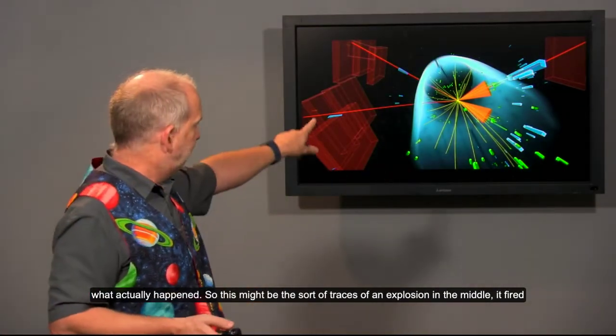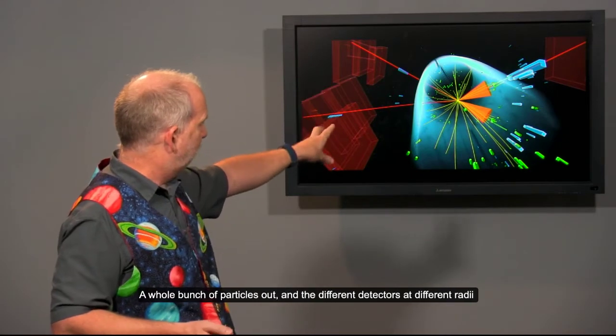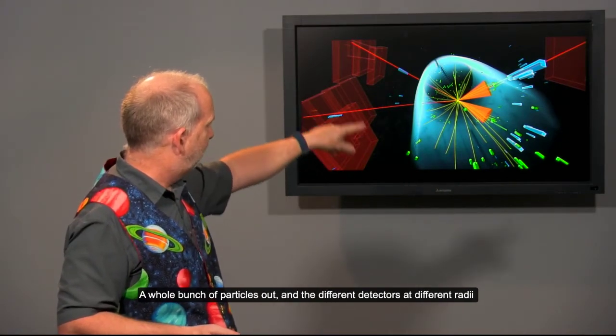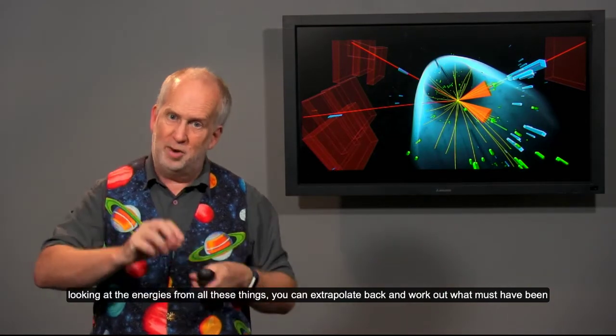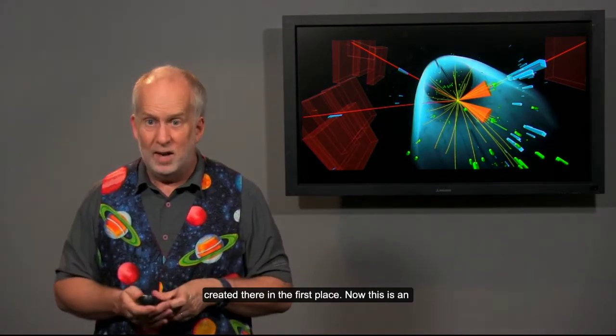So, this might be the sort of trace. It's an explosion in the middle. It fires a whole bunch of particles out, and they hit different detectors at different radii, and from looking at the energies from all these things, you can extrapolate back and work out what must have been created there in the first place.